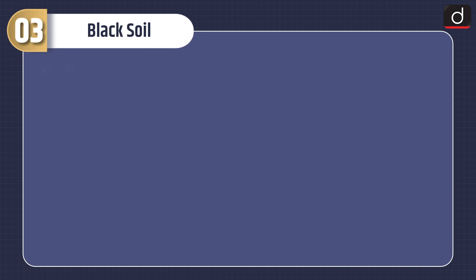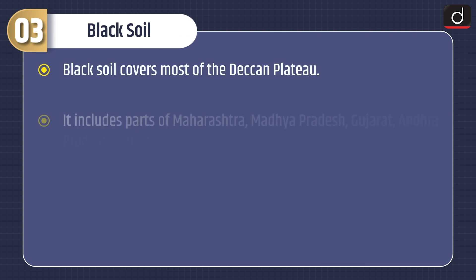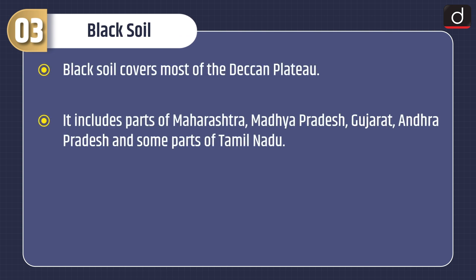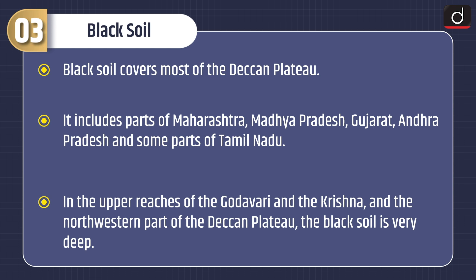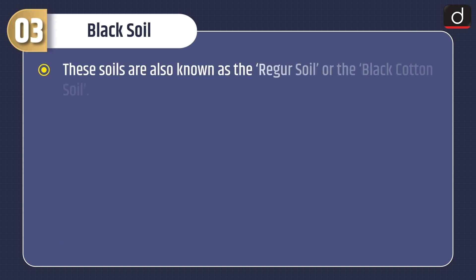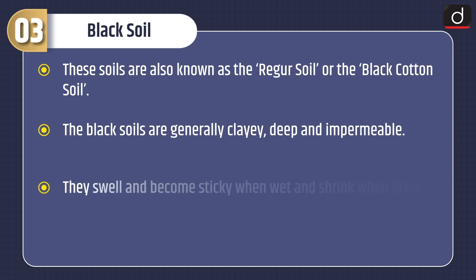Now let's discuss about black soil. Black soil covers most of the Deccan plateau. It includes parts of Maharashtra, Madhya Pradesh, Gujarat, Andhra Pradesh and some parts of Tamil Nadu. In the upper reaches of the Godavari and the Krishna and the north-western part of the Deccan plateau, the black soil is very deep. These soils are also known as Regur soil or black cotton soil.